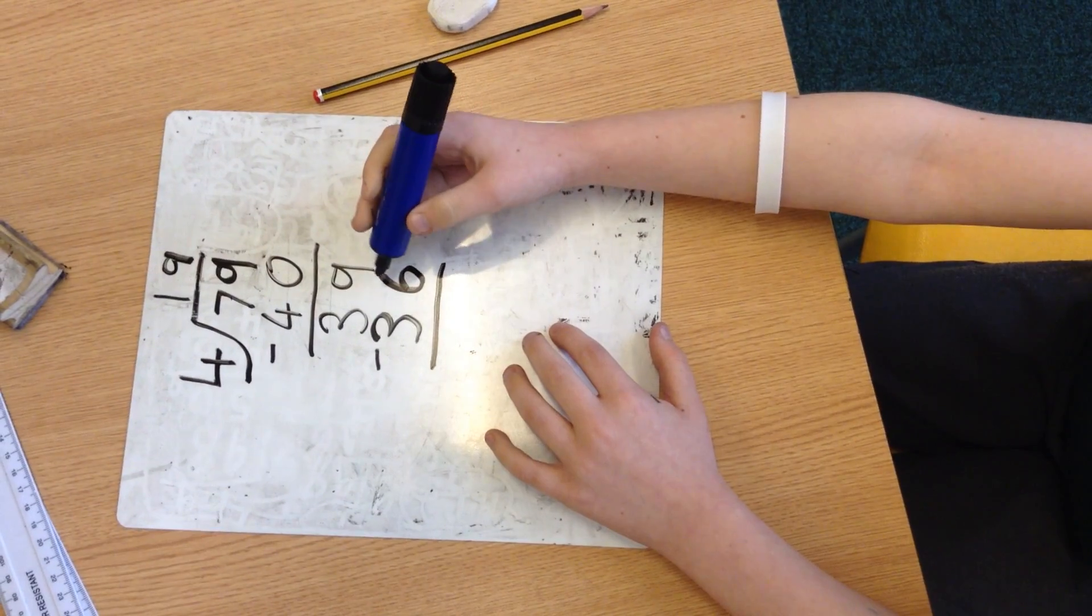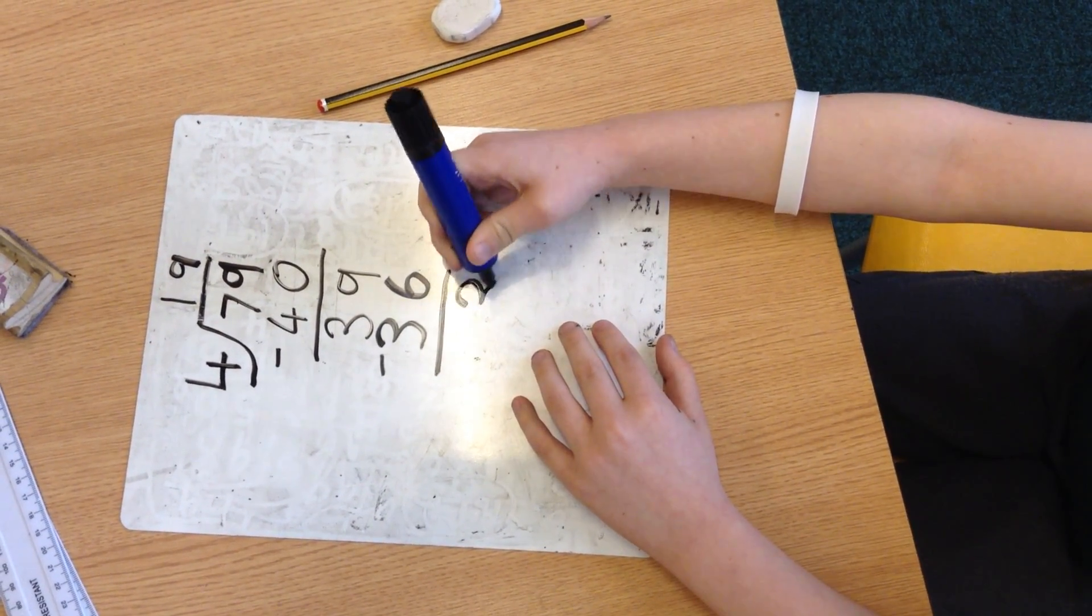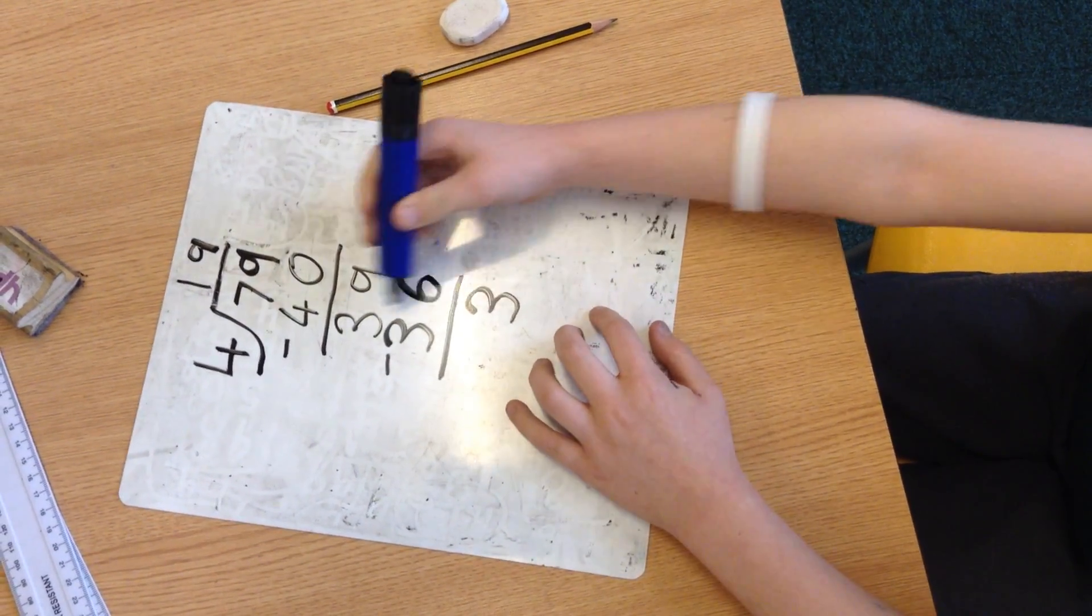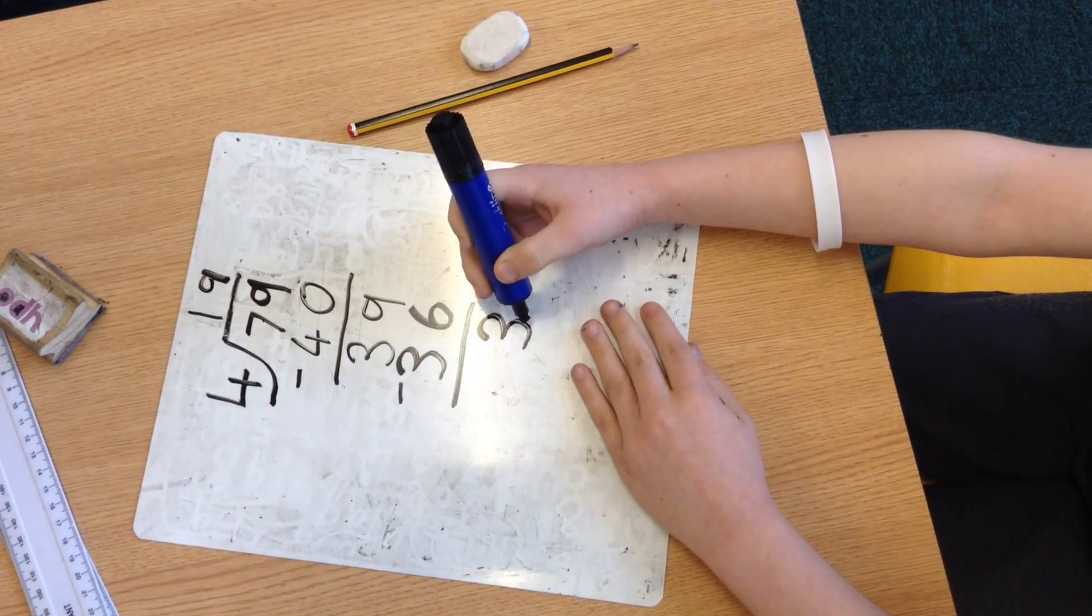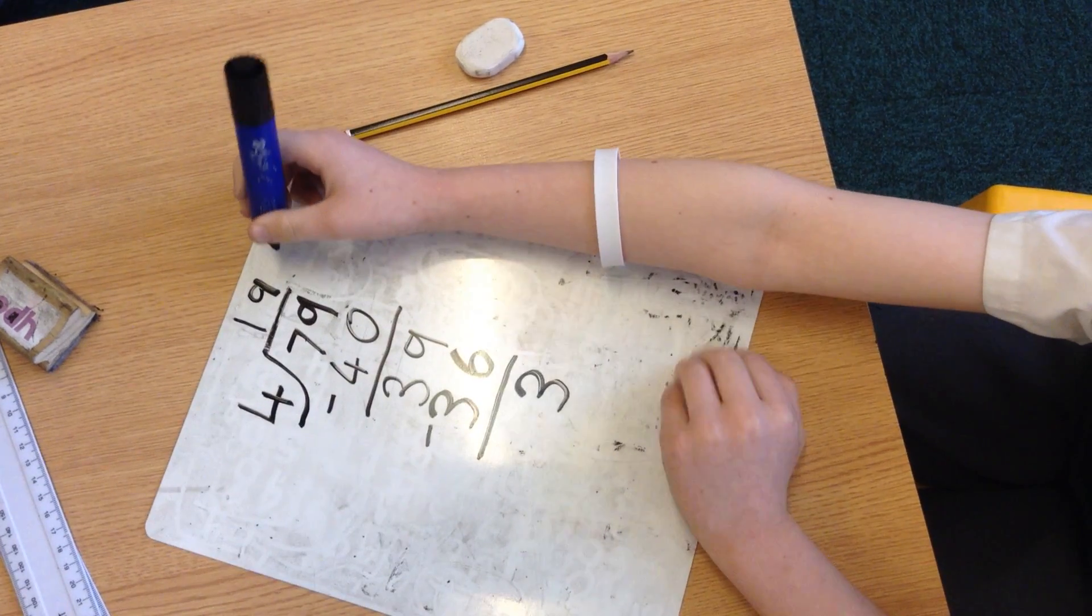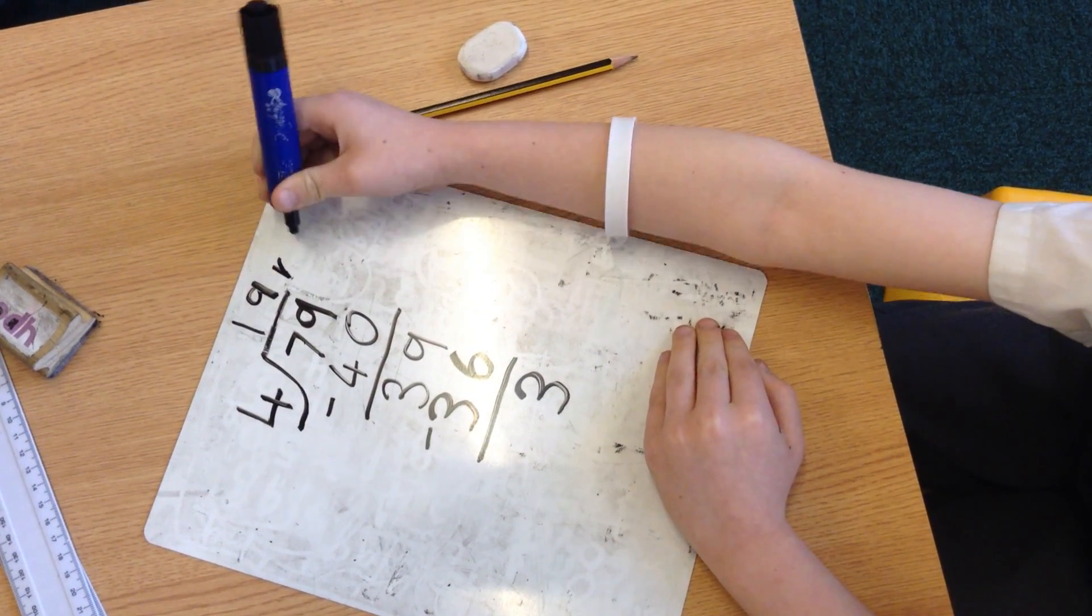Which would equal 3, because that is smaller than the number you originally had. So the answer would be 19 remainder 3.